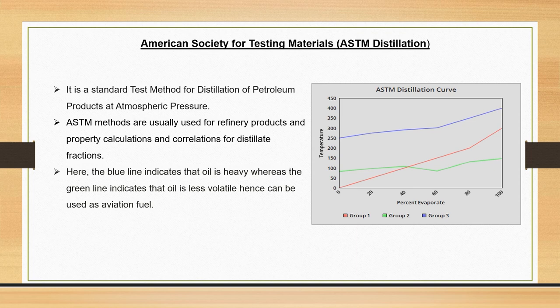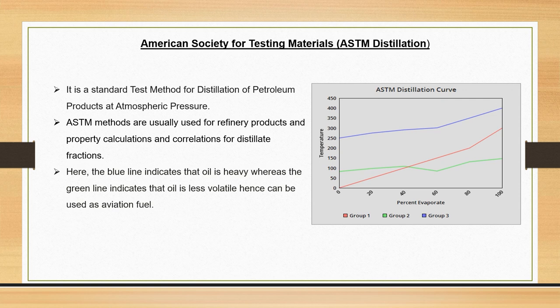The basic purpose of this method is to calculate the property and correlations for distillate fractions for various refinery products. As we can see in the rightmost corner of the slide, there is an ASTM distillation curve representing three groups of petroleum products — group 1, group 2, and group 3 — plotted on the basis of temperature and percent of evaporation. The blue line tops the list, indicating that the oil is heavy, whereas the green line indicates less volatile oil usable for aviation purposes.